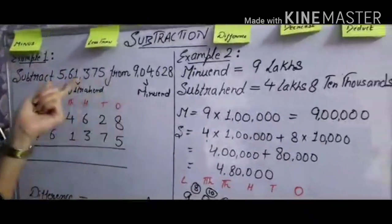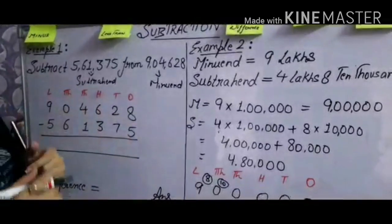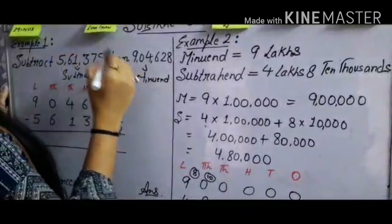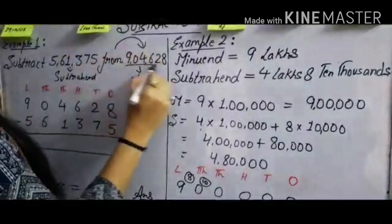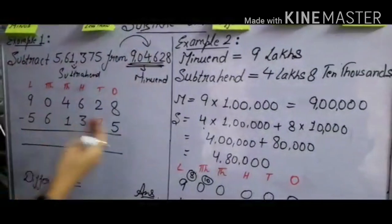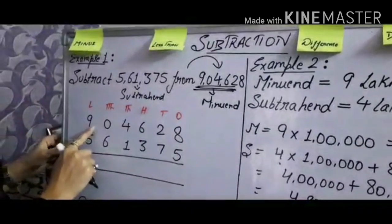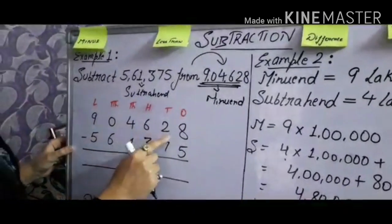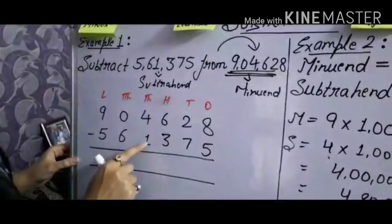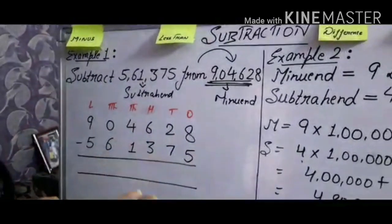Now after finding the minuend and subtrahend, we are going to place them according to the place value chart. One more thing: whatever number is written after 'from' is always the larger number, so that is our minuend. After arranging these digits according to the place value chart — 9,04,628 on top — we put the subtraction sign and write 5,61,375 below.